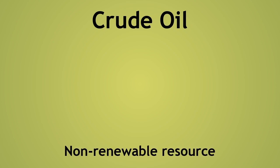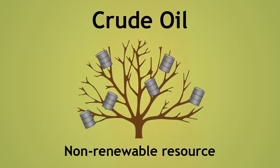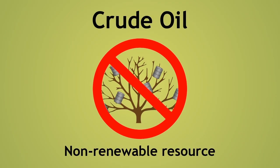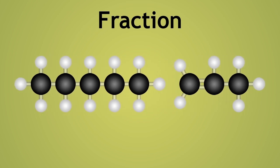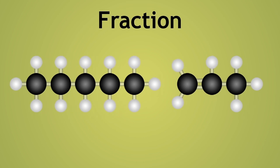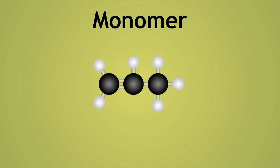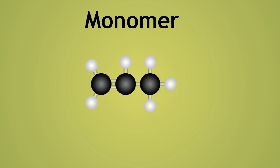Crude oil is known as a non-renewable resource because we cannot grow or produce crude oil. The fractions obtained from the fractional distillation of crude oil can be cracked to form alkenes, some of which are the monomers of these synthetic polymers.